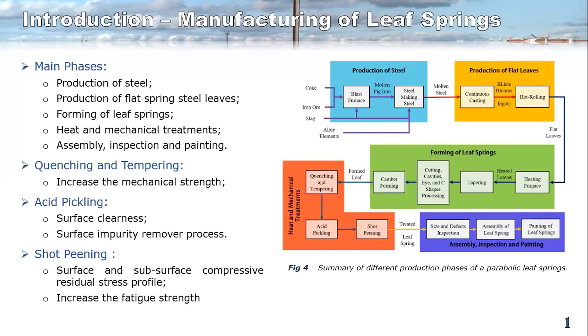Let me show you a graph about how leaf springs are made. We can see that leaf springs need to be formed in order to get the geometry specifications. Then they are treated by, for example, quenching and tempering, and peak wave. And finally, the surfaces are shot peened.